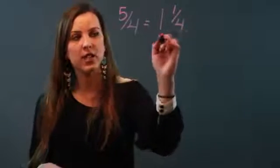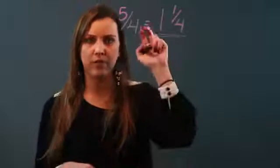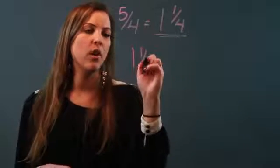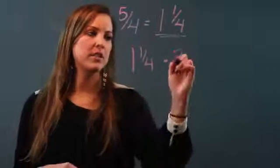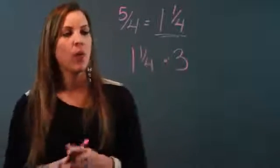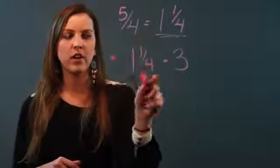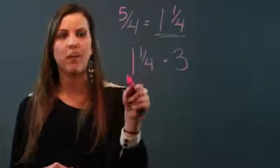So if I wanted to multiply this fraction with a remainder with another fraction, let's say I want to do 1 and 1/4 times any other fraction—let's just say 3, we'll use the whole number. What I have to do first is convert this mixed number into an improper fraction.